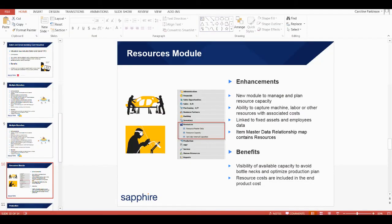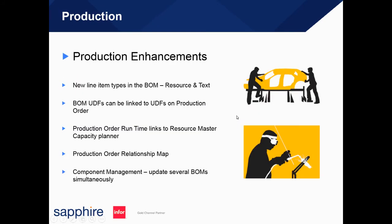Coming back into the presentation, we'll now look at the production enhancements. We now have a new line type for resources and text. Bill of material UDFs can be linked to UDFs on the production order. The production order runtime links to the resource master capacity planner. We also have a production order relationship map and component management, and the option to update several bill of materials simultaneously.